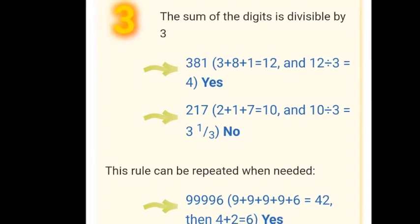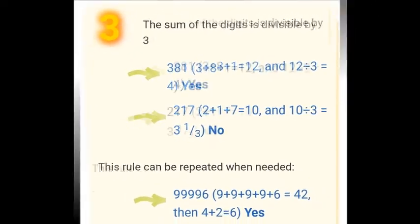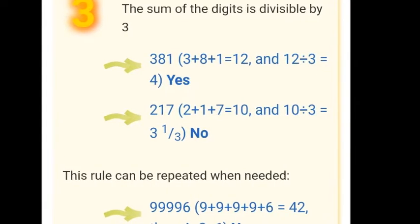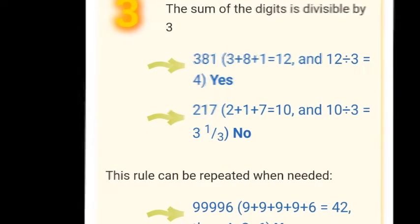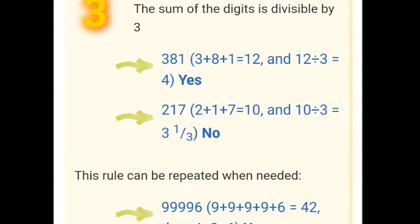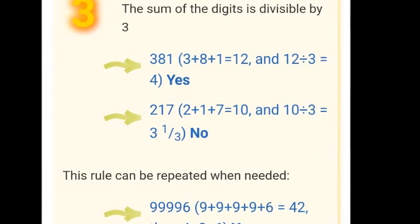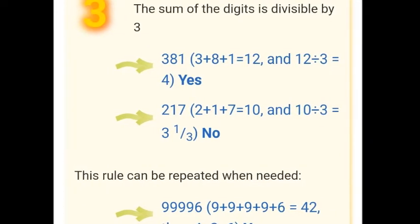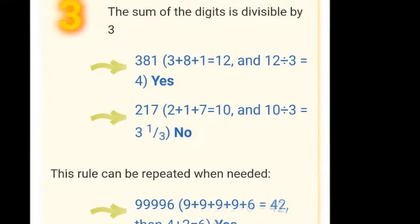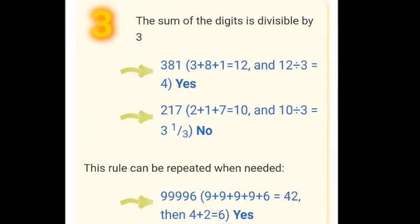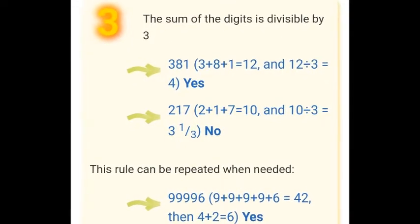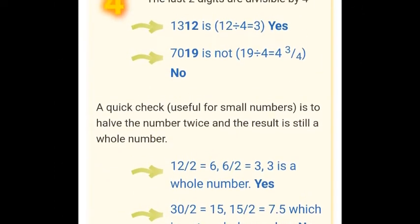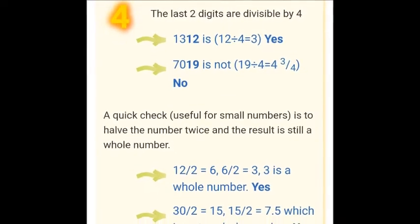This rule can be repeated when needed. If we take a big number, 99,996, we add its digits: 9 + 9 + 9 + 9 + 6 = 42. 42 is still two digits, so we add again: 4 + 2 = 6. Since 6 is divisible by 3, the number 99,996 is divisible by 3.